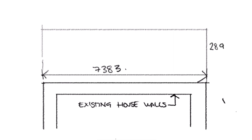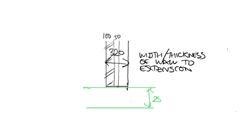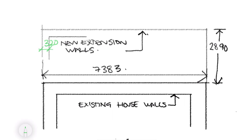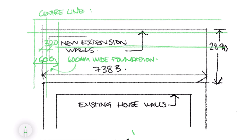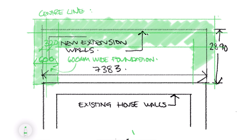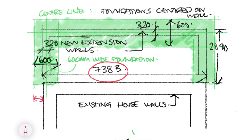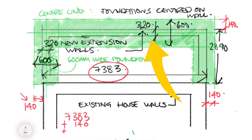A typical strip foundation will be around 600 millimeters wide by 250 millimeters thick for a typical extension wall. Now let's superimpose the foundations below, centered on the walls. At 600 millimeters wide — which is 0.6 meters — this gives us the approximate dimensions for our surface area of concrete. The external walls will measure around 320 millimeters in width.